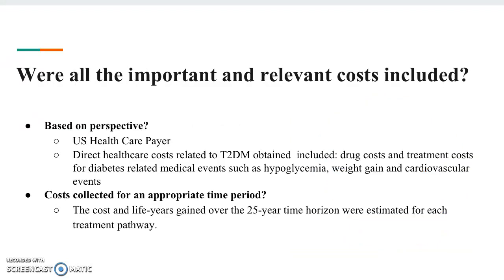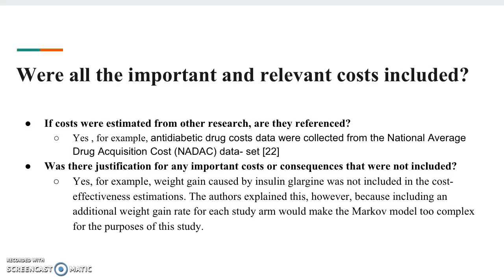All important and relevant costs were included. Based on the U.S. healthcare payer perspective, direct healthcare costs related to type 2 diabetes included both drug costs and treatment costs for diabetes-related medical events such as hypoglycemia, weight gain, and cardiovascular events. Costs were collected for an appropriate period — the cost and life years gained over a 25-year time horizon were estimated for each treatment pathway. Costs estimated from other research were referenced; for example, anti-diabetic drug cost data were collected from the National Average Drug Acquisition Cost dataset.